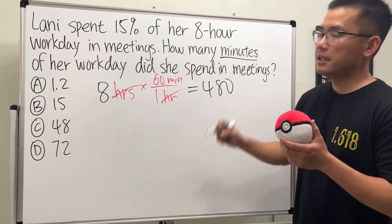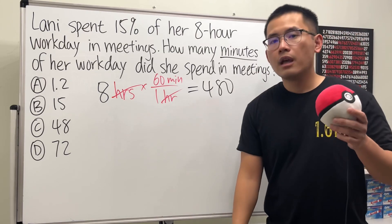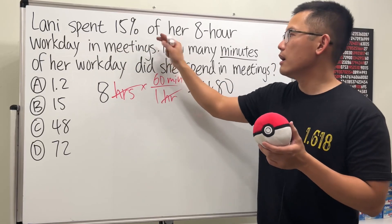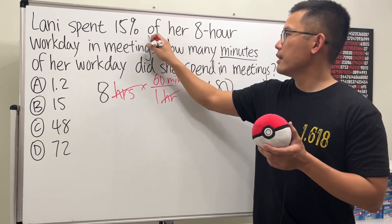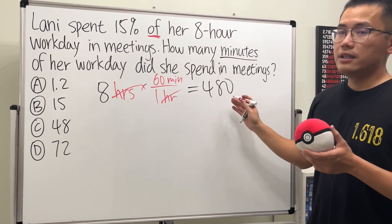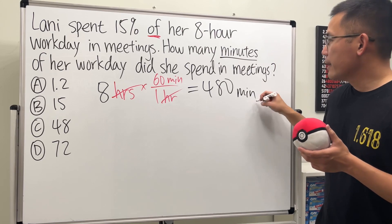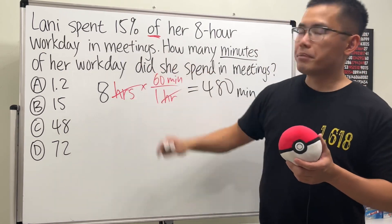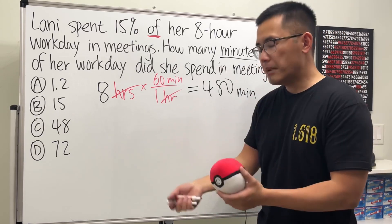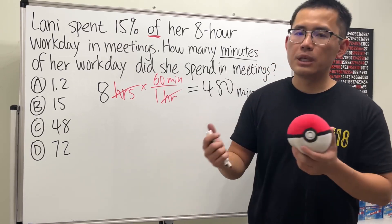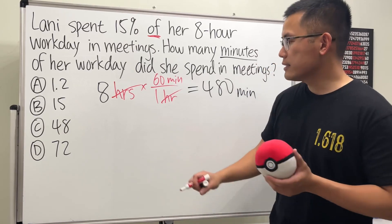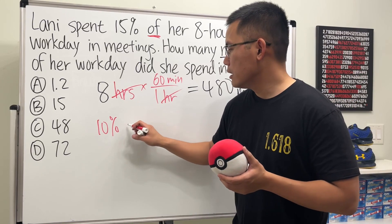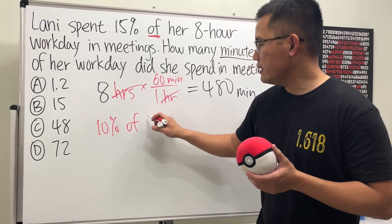That gives us 480 minutes. Now the question becomes: we have to find 15% of 480 minutes. The quicker way to do this is to break 15% into 10% and then 5%, so let's do 10% of 480 first.